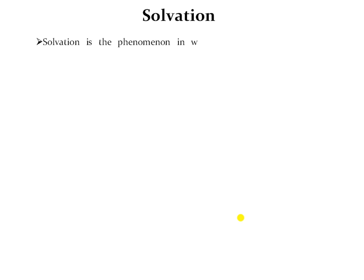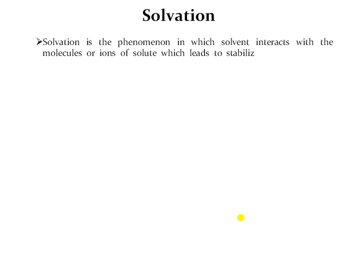Solvation is a phenomenon in which solvents interact with the molecules or ions of solute, which leads to stabilization of solute species in the solution. As you add your solute molecule in the solvent, it starts to stabilize within the solvent molecule, and this stabilization process is known as solvation.